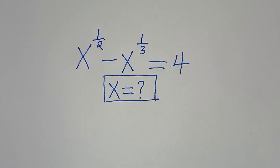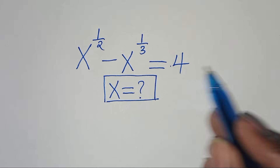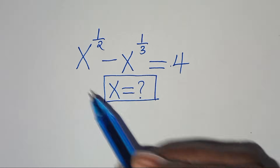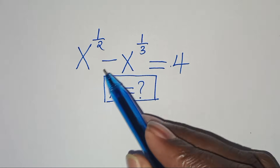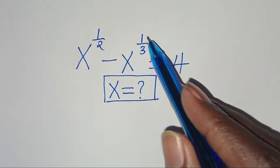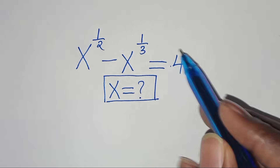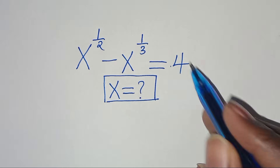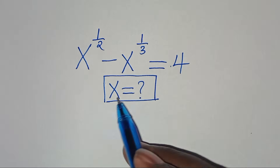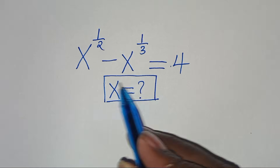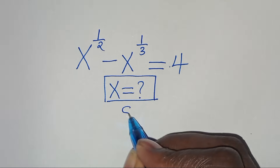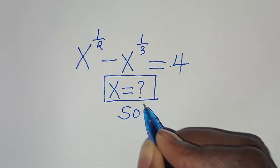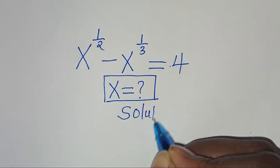Hello everyone, you are welcome to solve this nice algebra problem, which is x to the power of a half minus x to the power of 1 over 3. This is equal to 4. So, what are the values of x? Now let's provide a solution from here.